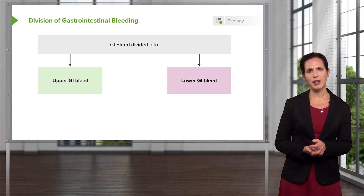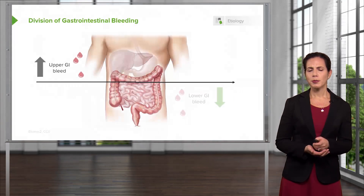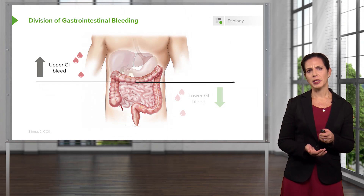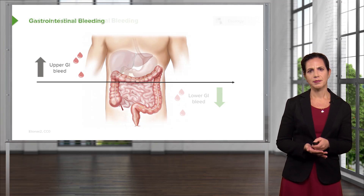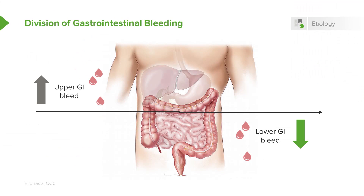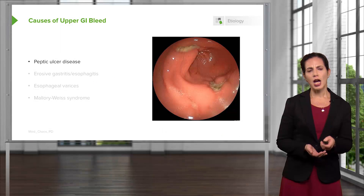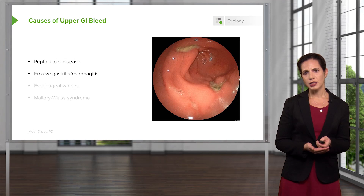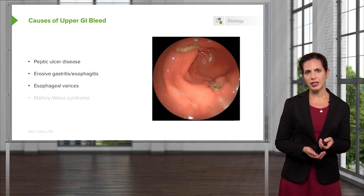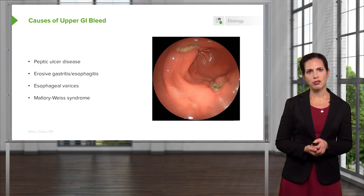Where is the dividing line? Upper GI bleeding is bleeding that takes place from the stomach or from the upper portions of the small intestine. For lower GI bleeding, that's bleeding that takes place in the more distal small intestine as well as the entirety of the large intestine. The most common causes for upper GI bleeding are peptic ulcer disease, erosive gastritis or esophagitis, esophageal varices, and Mallory-Weiss syndrome.